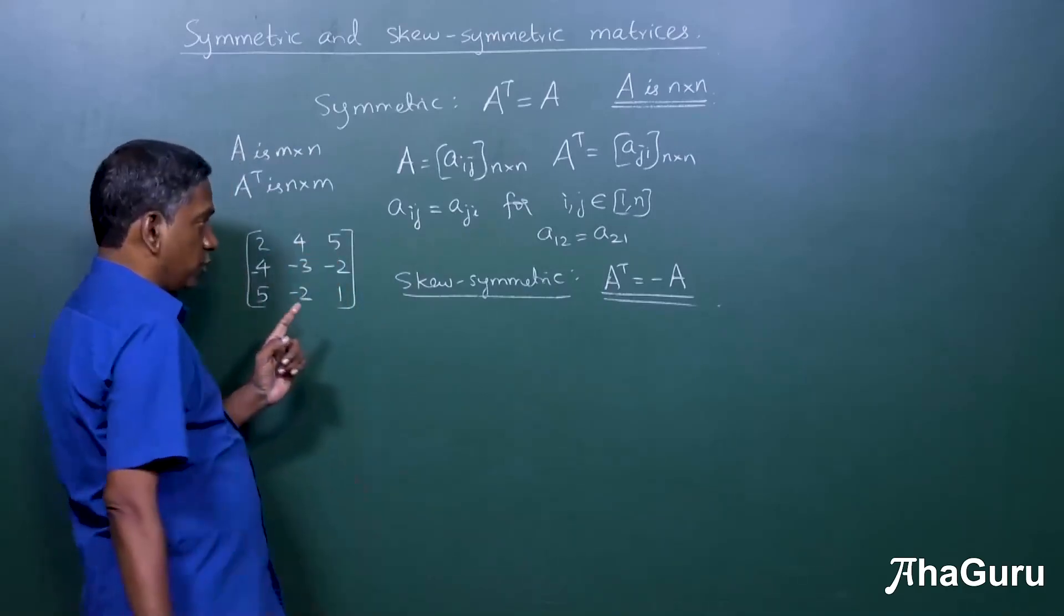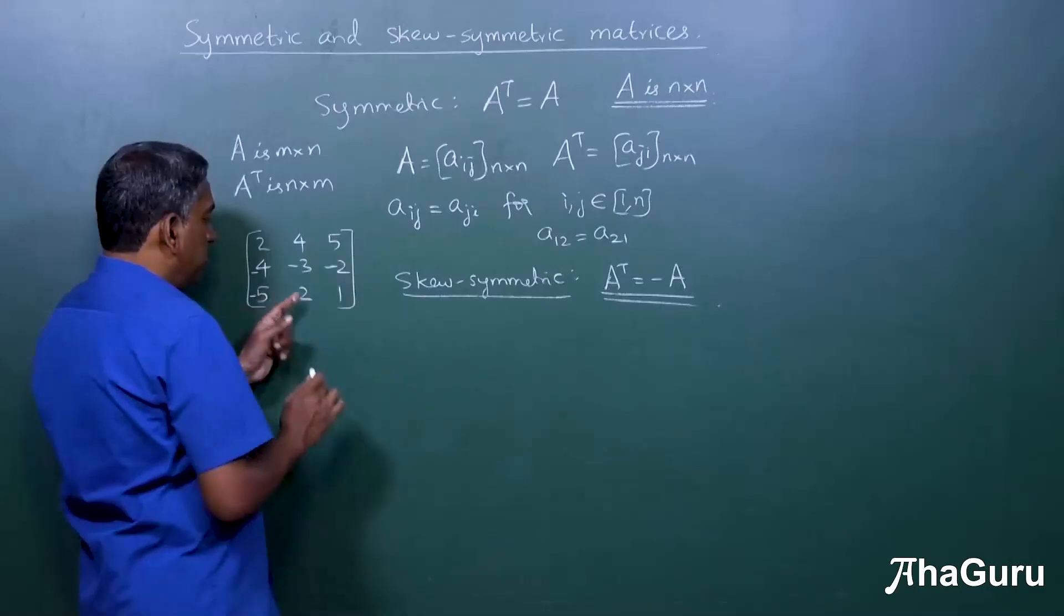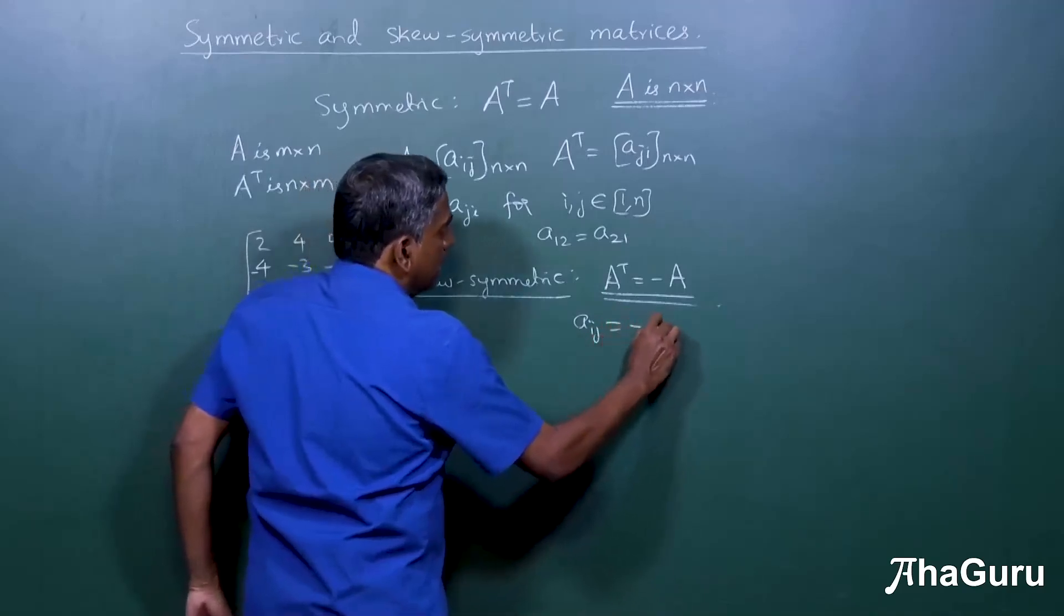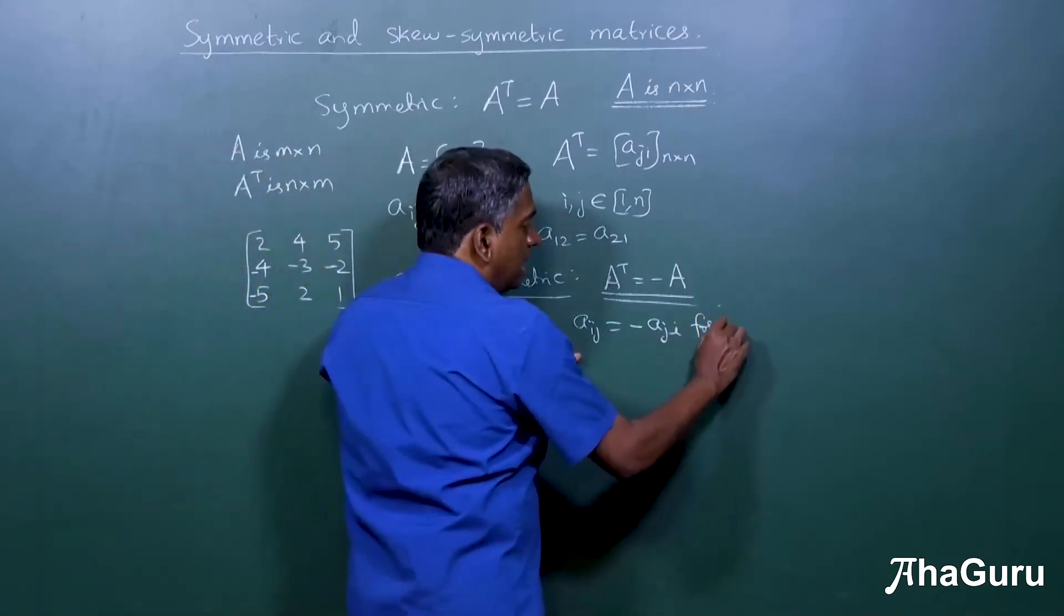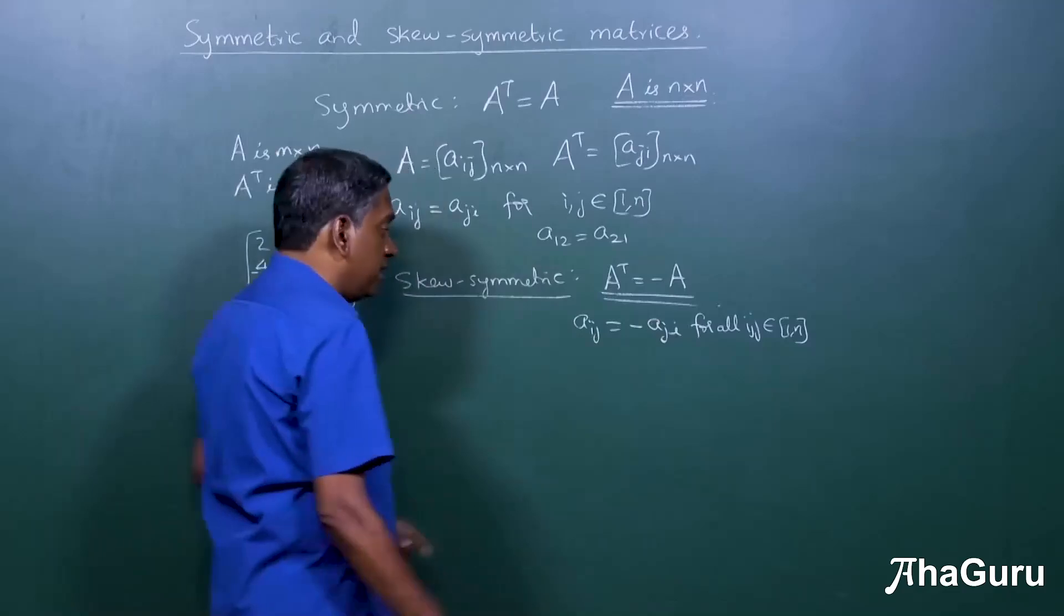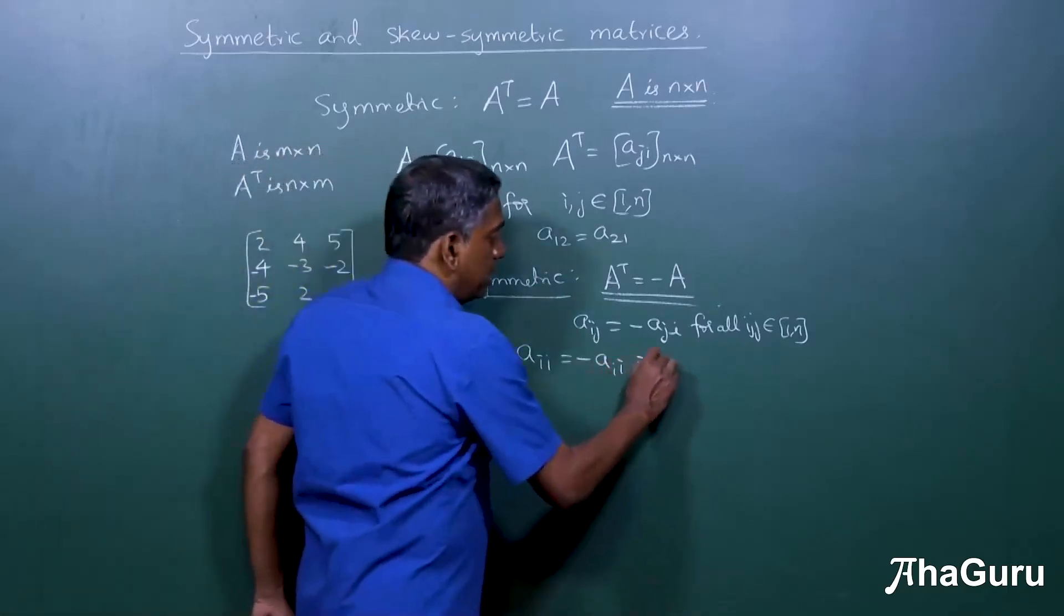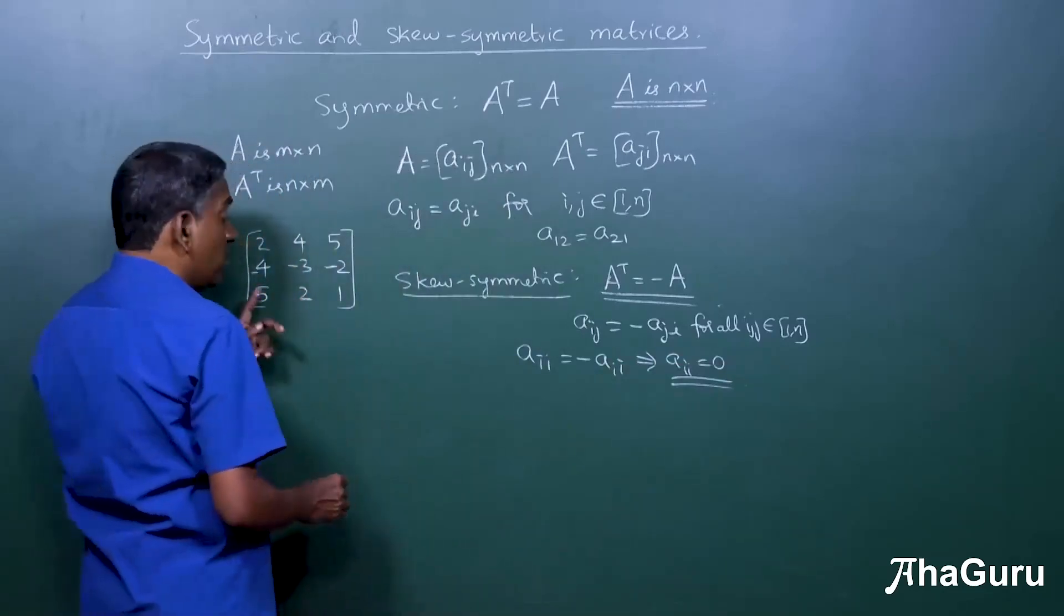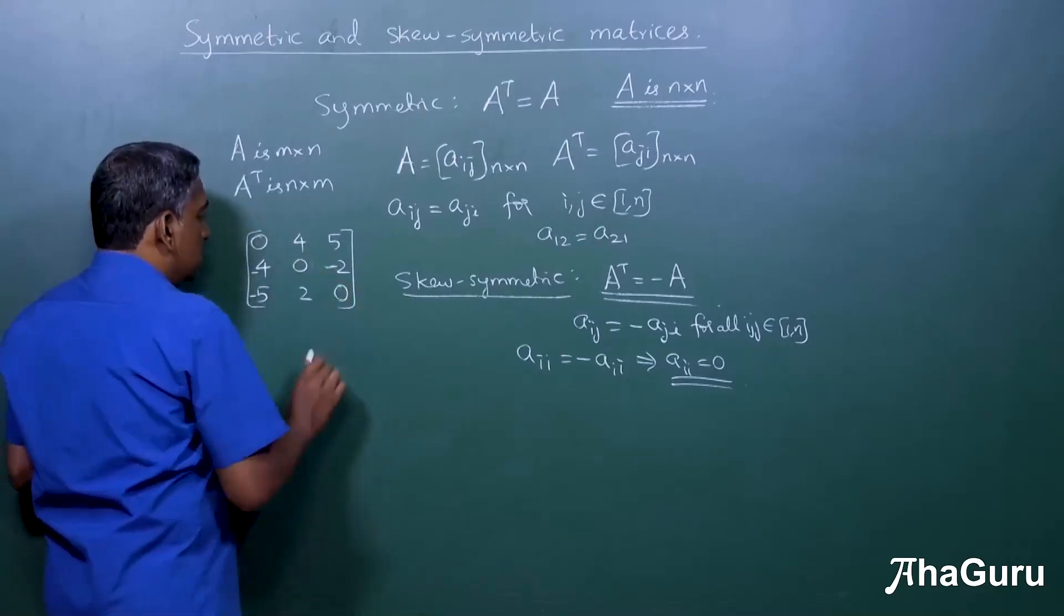If this is four, this must be minus four. If this is five, this must be minus five. If this is minus two or this is minus two, this must be plus two. But that's not all. So you can clearly see that Aij must equal minus Aji. But here is the key. Because this is true for all ij belonging to one comma n, this must also be true for diagonal entries. So you will find Aii is minus Aii. This implies Aii is zero, which means if you need a skew-symmetric matrix, all the diagonal entries must be zero.